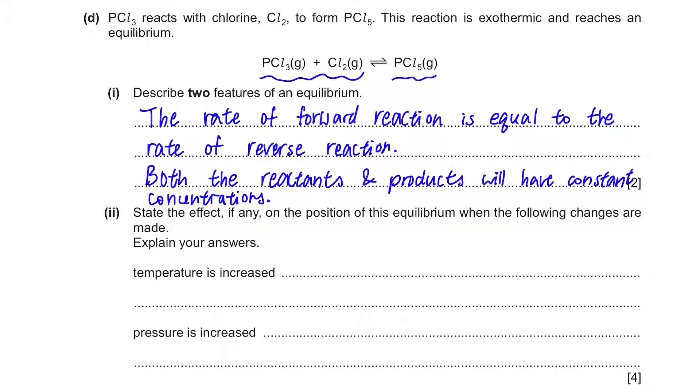State the effect, if any, on the position of this equilibrium when the following changes are made. Temperature is increased. So the first part of the question said that the reaction is exothermic, which means that the forward reaction is going to produce heat. In other words, increase the temperature.